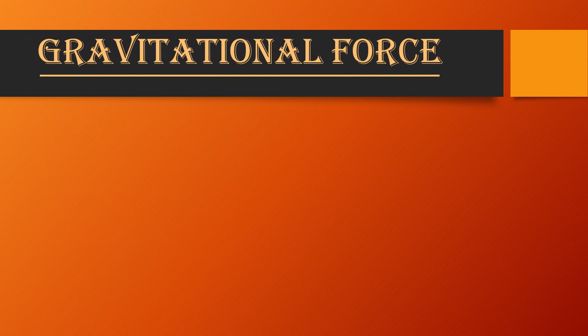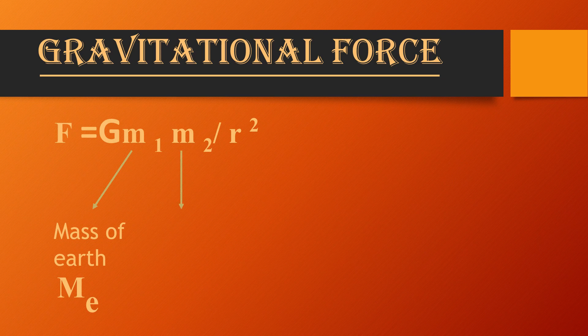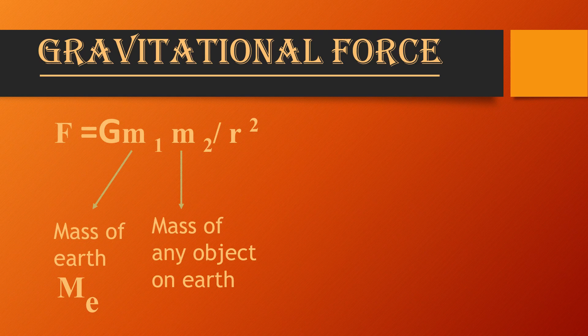Our next definition is Gravitational Force. From the name we can conclude that gravitational force is the force of attraction of Earth. In our previous class we derived the formula from the law of gravitation: F = G·M1·M2 / R². We set this as the generalized form of the law of gravitation, in which M1 is the mass of Earth — we represent this as capital ME, where M represents mass and E represents Earth — and M2 is the mass of any other object, represented as small m.